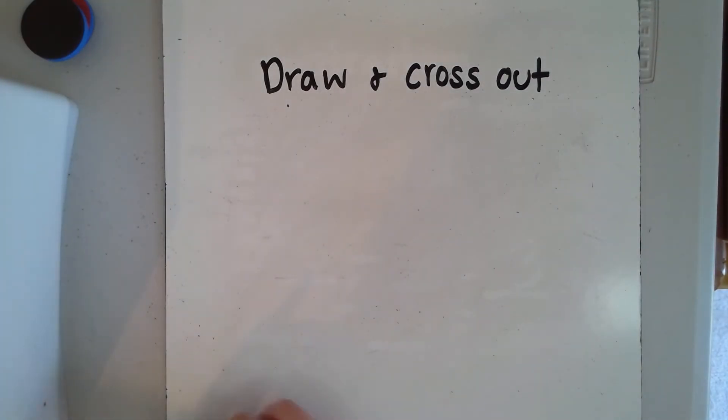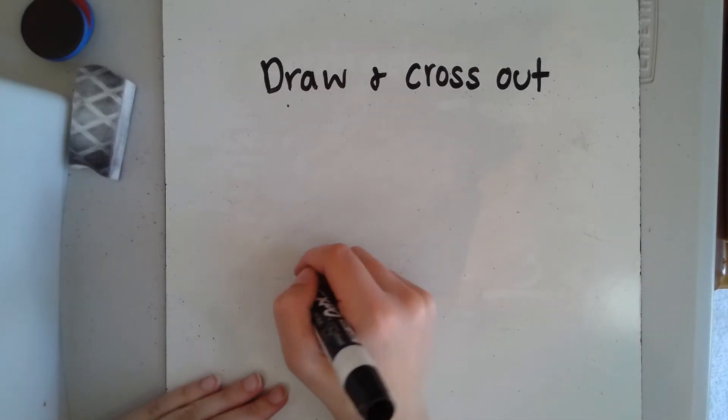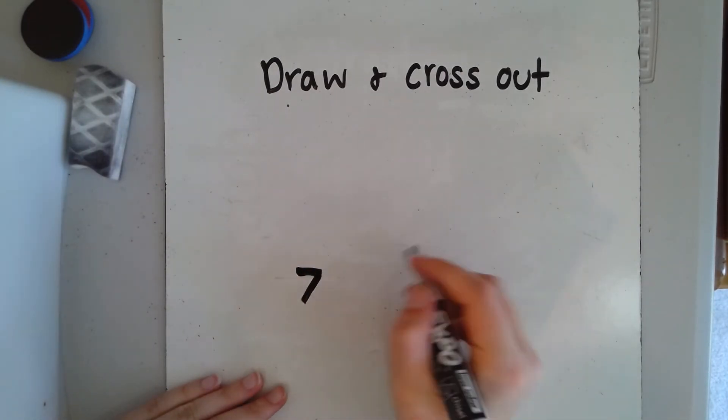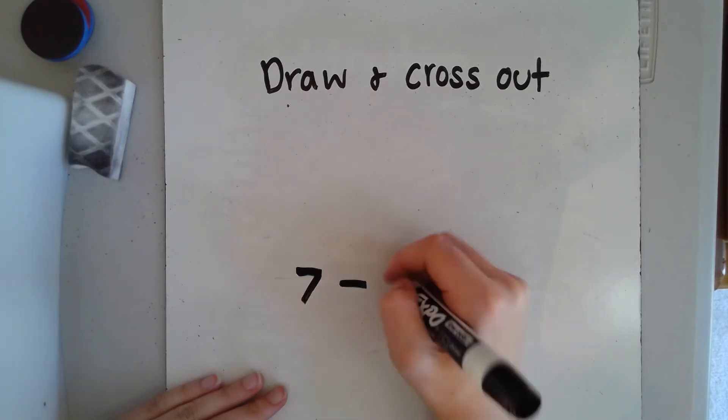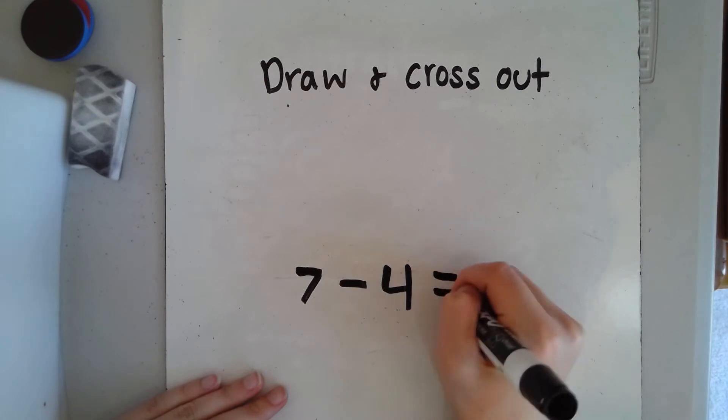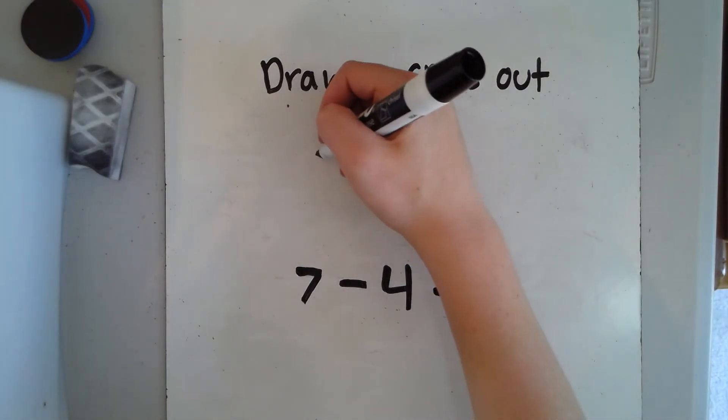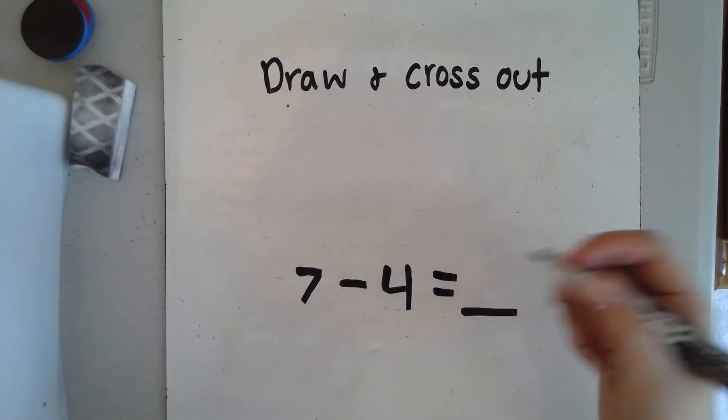Now let's try it a different way. Say I already have my problem. Here is my subtraction problem that I see: seven minus four equals blank. I need to find out the answer, so I'm going to draw a picture to solve this subtraction problem.